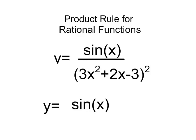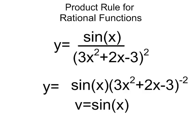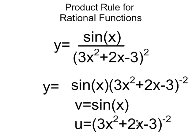And now I'm all ready to proceed knowing that my first function v is sine x and my second function u is 3x squared plus 2x minus 3 to the exponent negative 2.